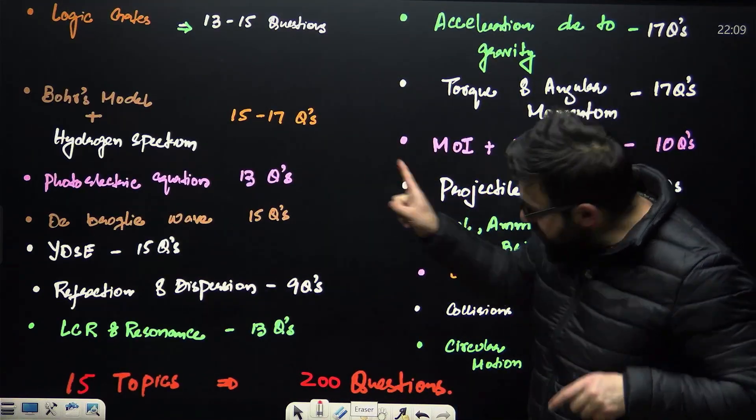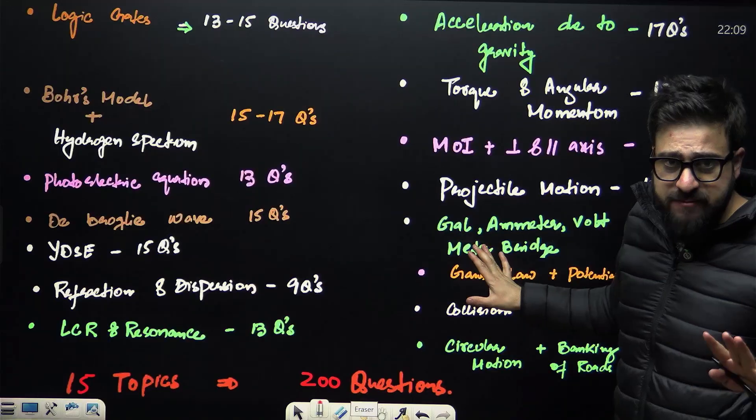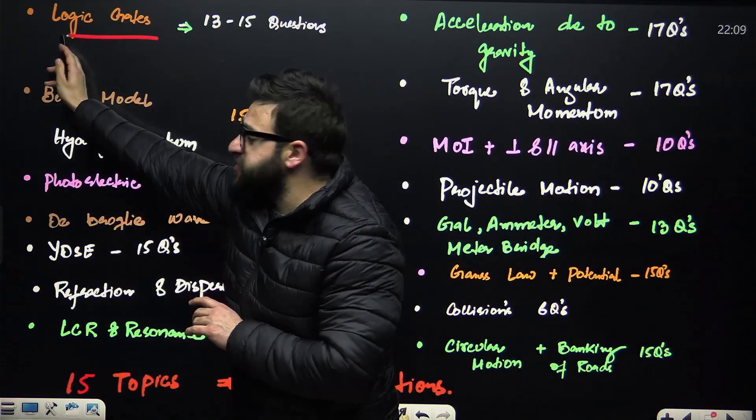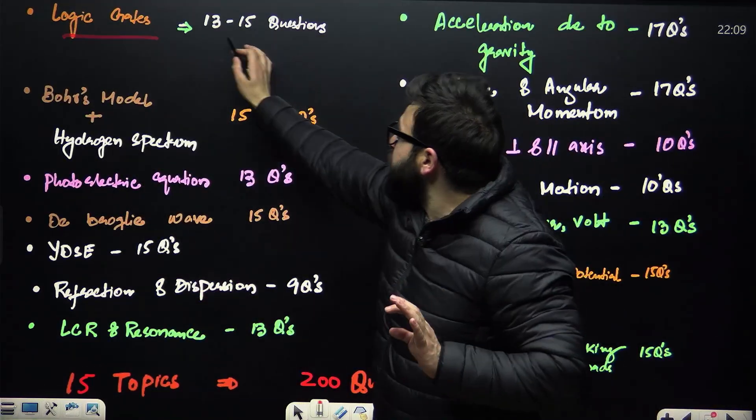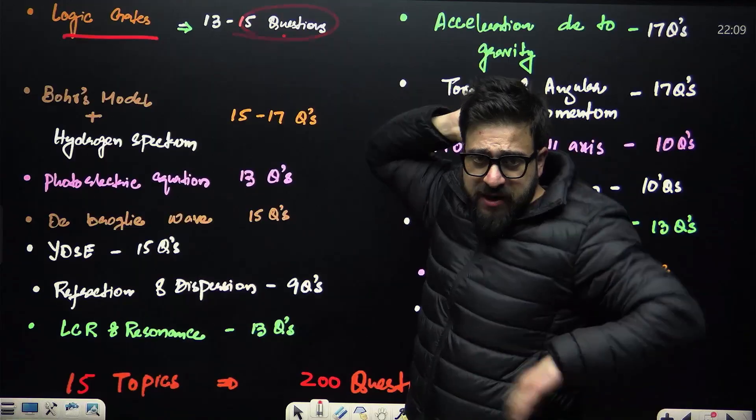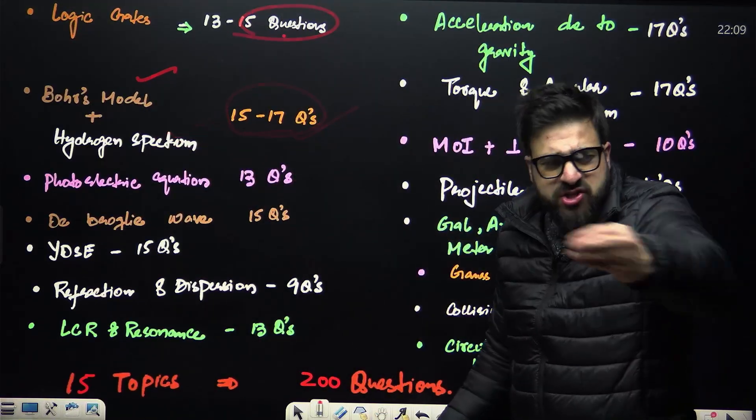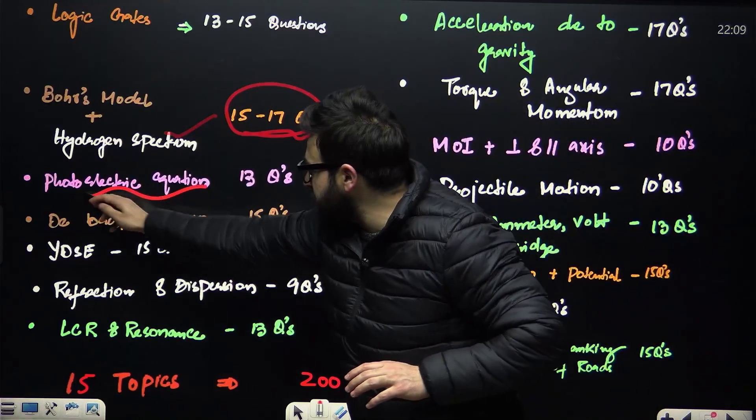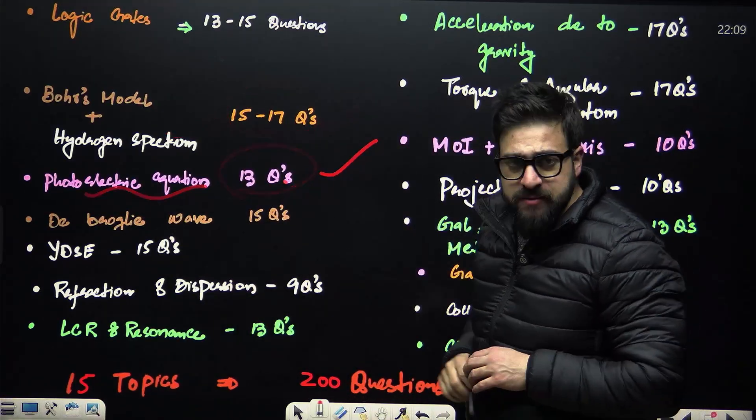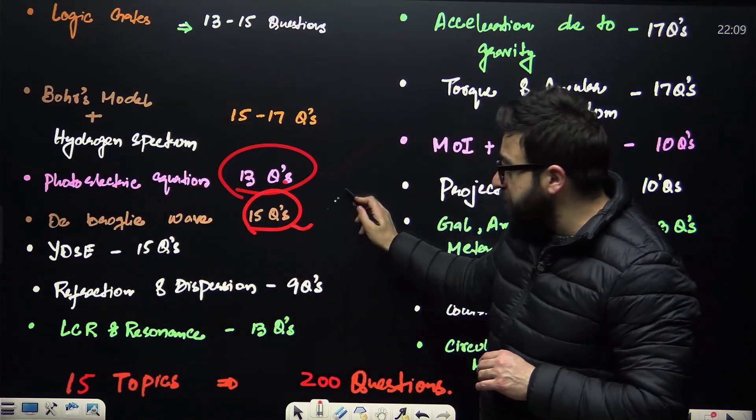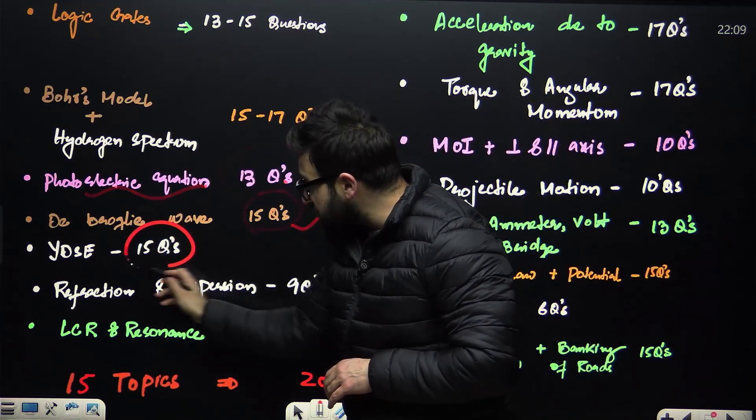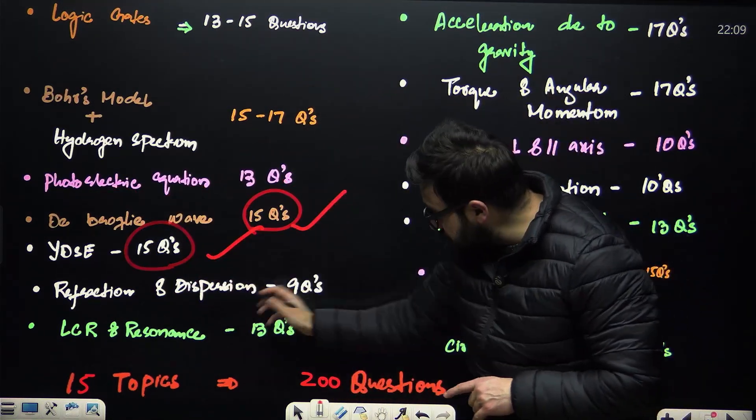First, let's take a look at this slide. My dear NEET aspirants, we say logic gates - an extremely important topic, 15 questions are still now in the past 10 years. Bohr's model plus hydrogen spectrum, 17 questions, extremely high weightage. Photoelectric equation, we say 13 questions. De Broglie wave, 15 questions. YDSE, 15 questions.